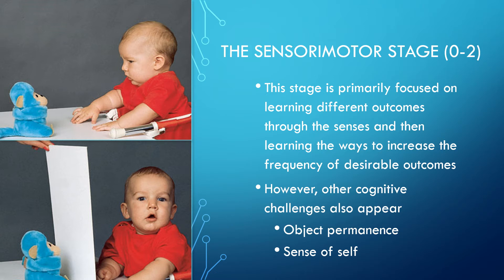His classic object permanence test is depicted here in the images. You see a young boy shown a stuffed animal that looks like a blue monkey — the boy is looking at it, interested in it. Then the researcher places a piece of paper between the boy and this monkey. The young child seemingly indicates he doesn't understand object permanence — he's no longer looking at the thing he was very intrigued by, suggesting he doesn't believe that object is continuing to exist. Subsequent research has suggested children might actually understand this idea a little bit earlier than Piaget proposed.